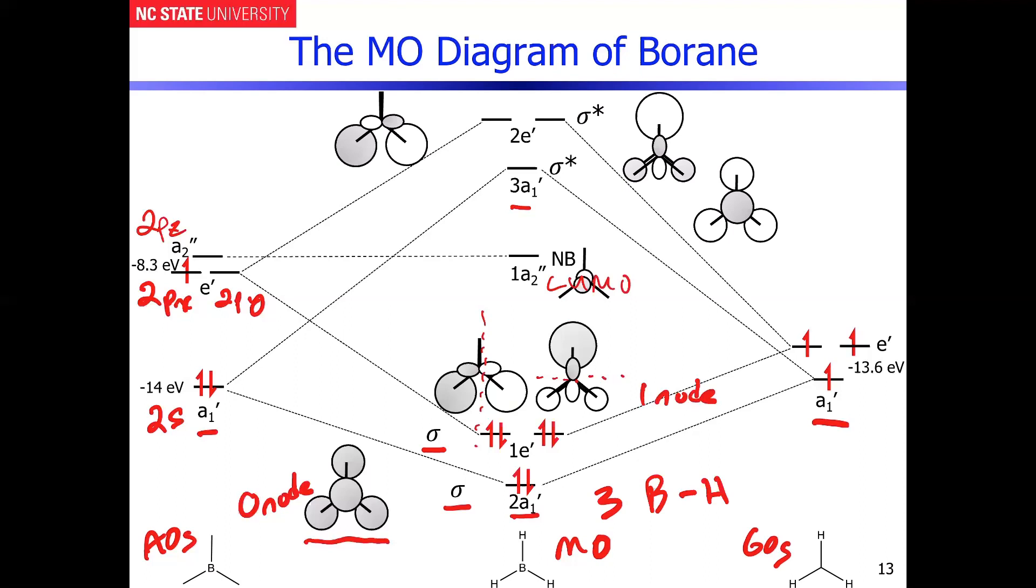When you see what I've done, you see now this has positive phase, those are all negative. So that's the out-of-phase A1' combination.